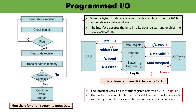This is the flowchart for the CPU program to input data. First, read the status register to identify the flag bit status. Then check the flag bit — it may be 1 or 0. If the flag bit is 1, data is stored in the data register, so transfer the data to memory. Check if the operation is complete; if complete, continue with the program. If the operation is not complete, check the flag bit status again. This process continues as long as the flag bit status is 1.